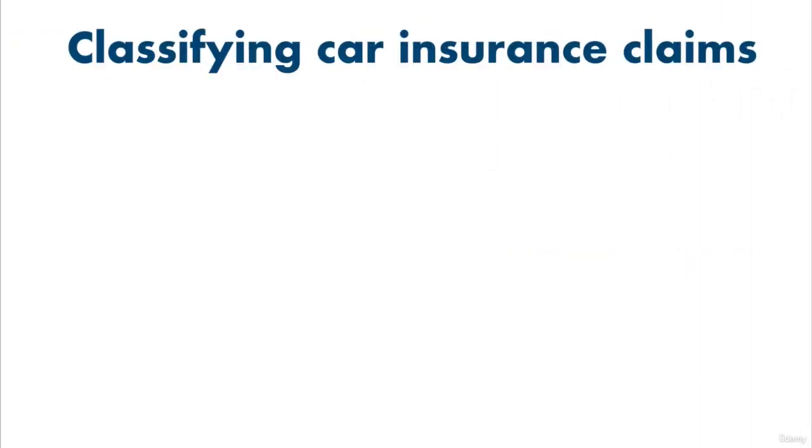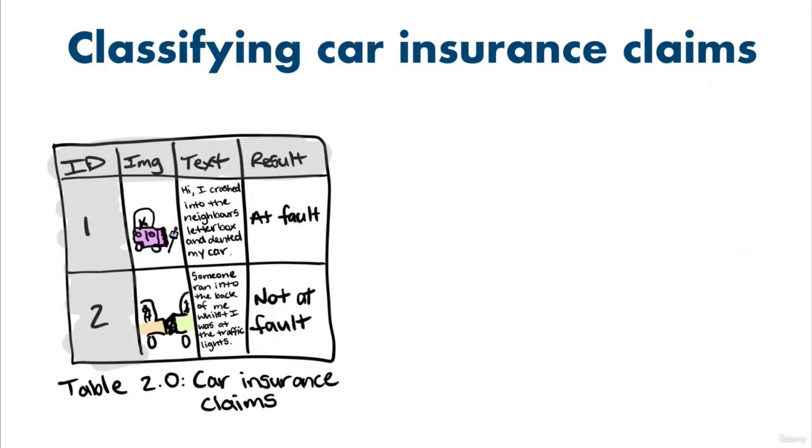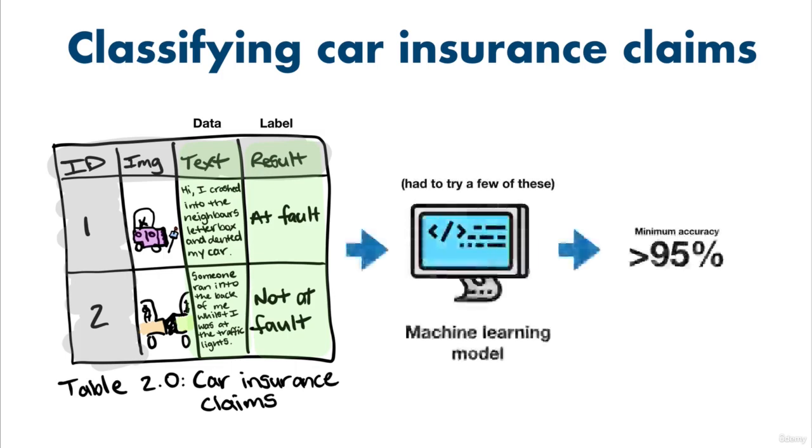As an example of an evaluation metric being used in practice, we had a project where we wanted to use the text from car insurance claims to predict who caused the accident. The person submitting the claim or the other person involved. The car insurance company we partnered with wanted at least a 95% accurate model to consider the project worth continuing. This meant the model I was building had to be able to read a car insurance claim and predict with 95% accuracy who caused the accident. This meant it was only allowed to get it wrong one out of 20 claims.